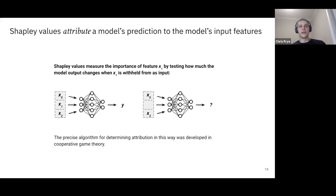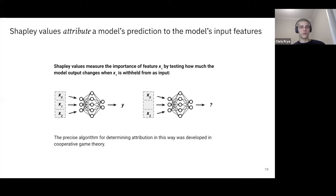Shapley values have the goal of attributing a model's prediction — its output — to the model's input features. For a neural network with three input features x0, x1, and x2 and a single output y, if you wanted to ask what's the importance of x1 in making prediction y, one way to test that is to withhold x1 as an input and see how that affects the model's prediction. Shapley values got their start in cooperative game theory, so let me build them up intuitively from that background.